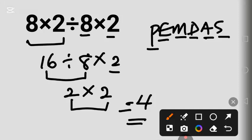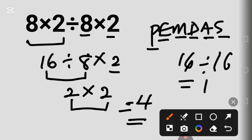Some people may make this mistake: 8 times 2 is 16, divided by 8 times 2 is 16, so they compute 16 divided by 16, which equals 1. This answer is not correct.